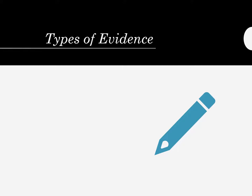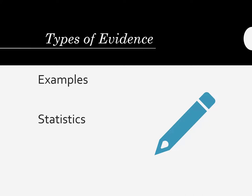There are basically three types of evidence you should look for when doing research on your speech topic. Ideally, you want to be able to include a variety of evidence to create a more balanced argument. Concrete examples are effective when there's a need to illustrate a point, but just because you can list a few instances doesn't mean you have a strong argument. In order to avoid any hasty generalizations, you should try to support your examples with statistics that show them to be generalizable. You can also support your argument with statistics that show trends, or for comparisons or distribution patterns.